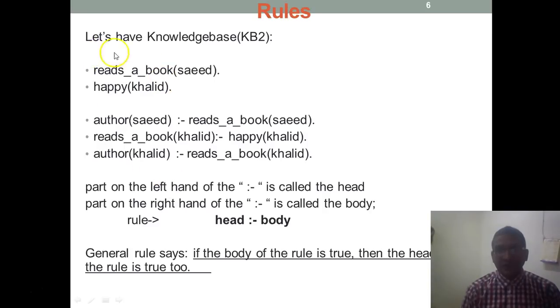So now move on to a more wider knowledge base. So here we have facts and also we have rules. Facts are simple statements which contain only one atom. But when it comes to rules, rules are used to state information which infers or implies another fact. So if we look at this knowledge base, we have reads_a_book(saeed), happy(khalid).